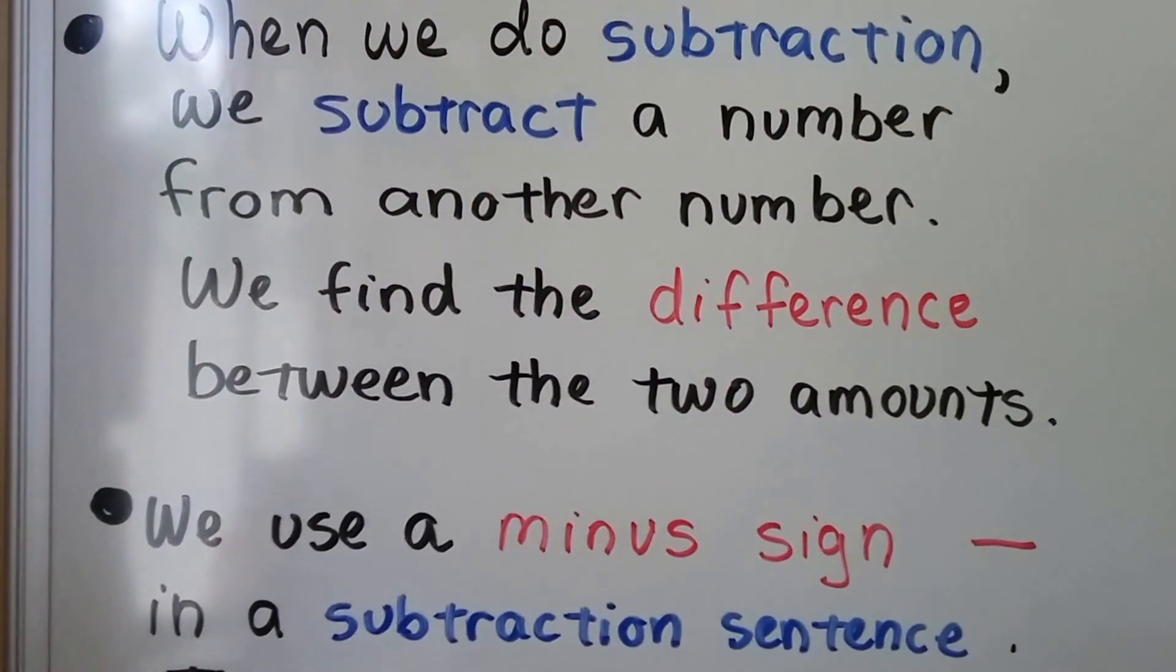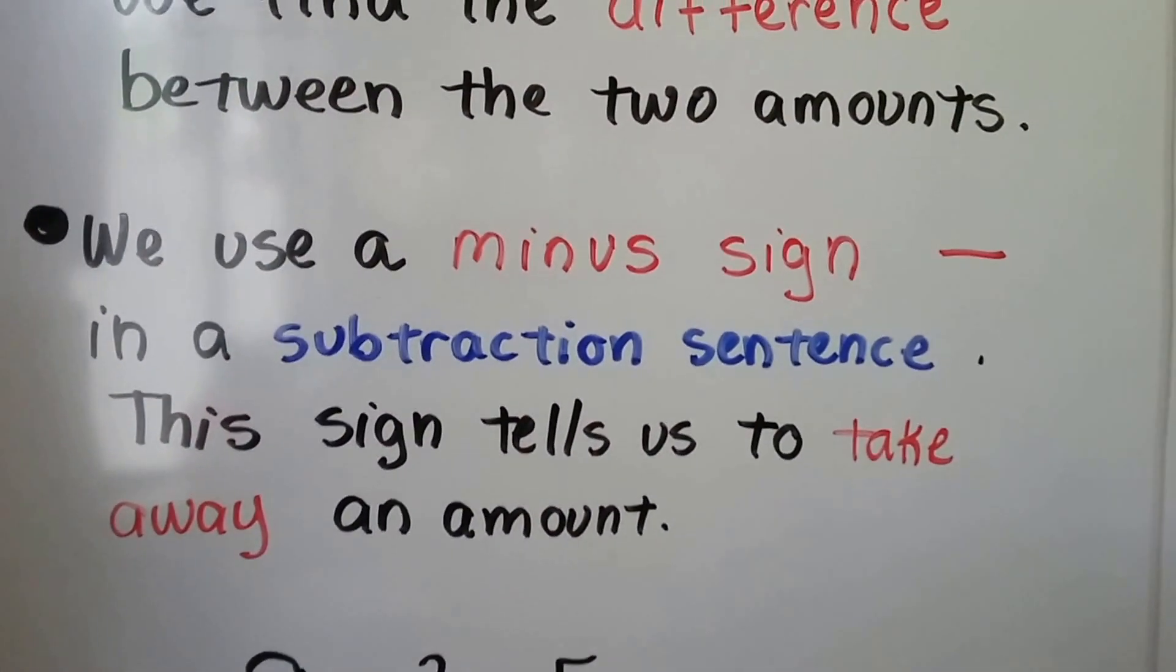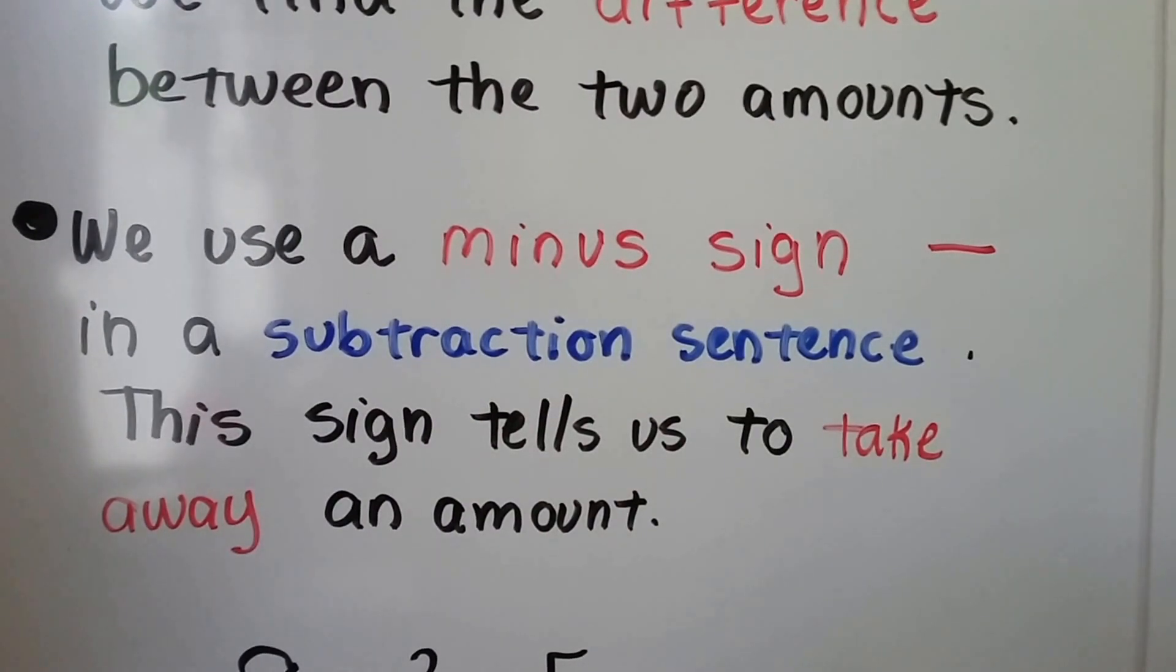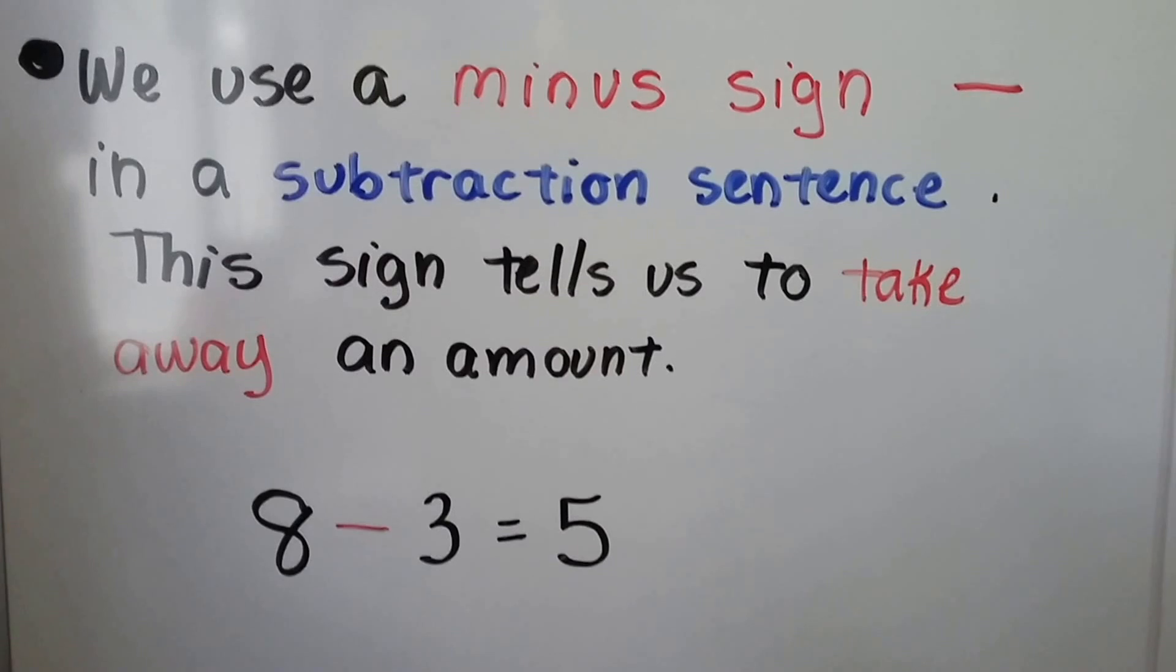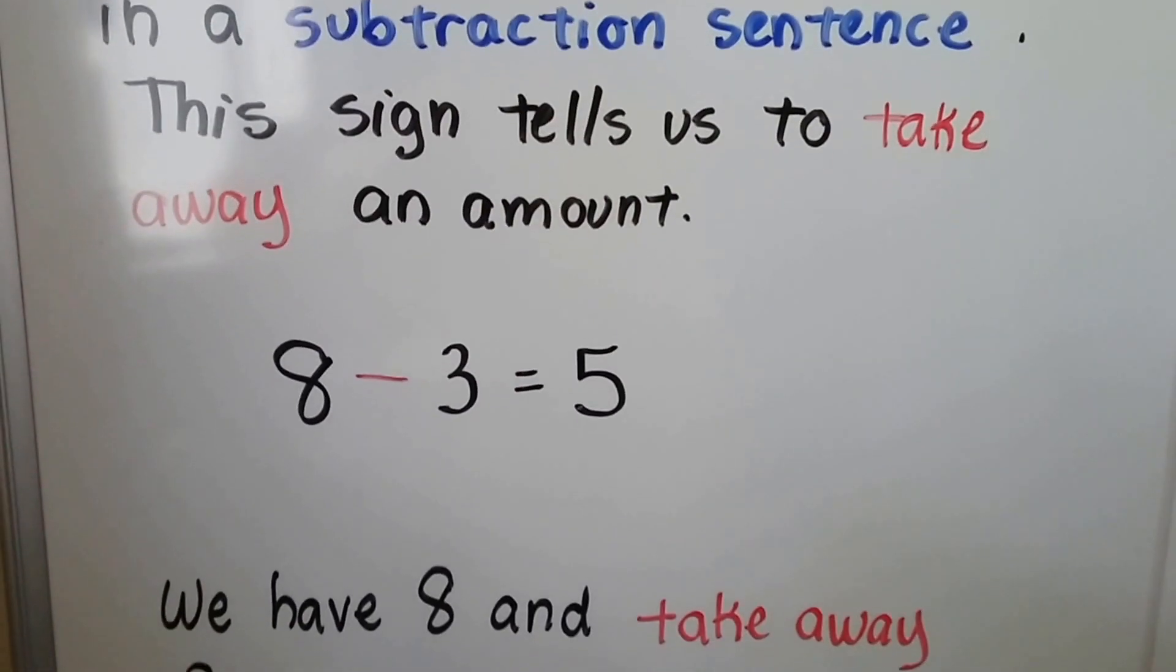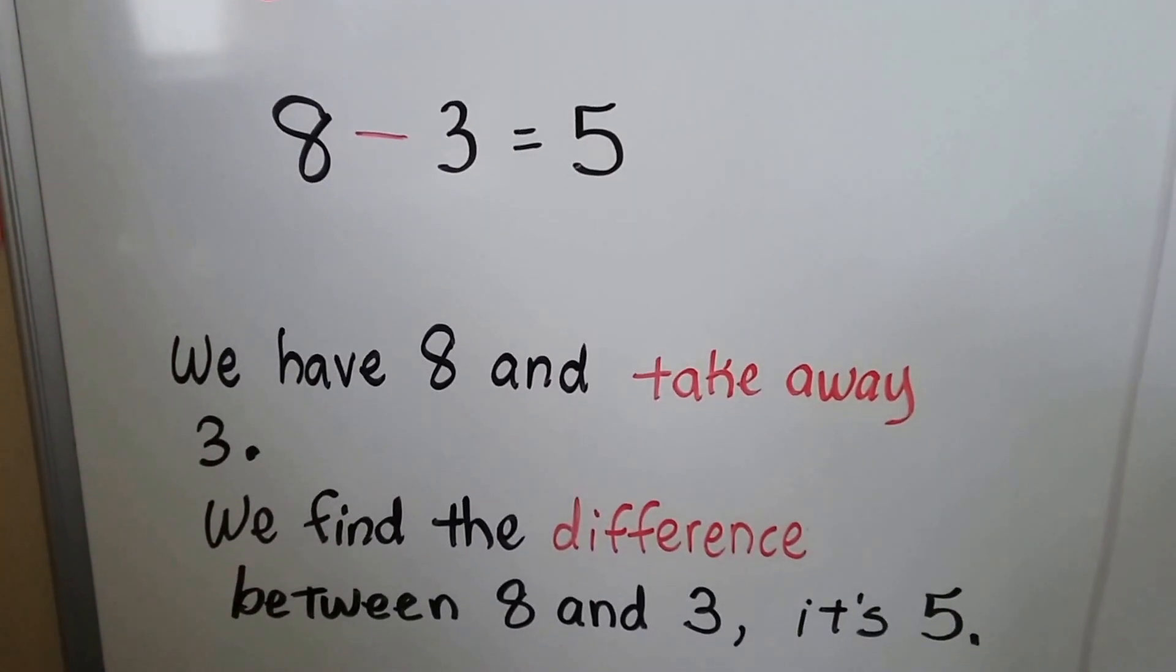We use a minus sign—it's the symbol right here—in a subtraction sentence, and this tells us to take away an amount. 8 minus 3 equals 5. We have 8 and take away 3. We find the difference between 8 and 3. It's 5.